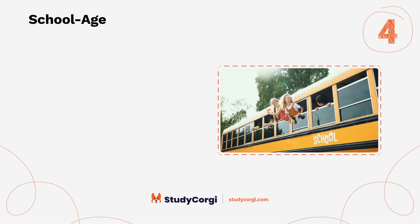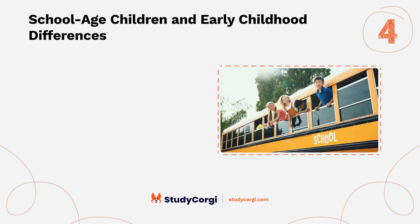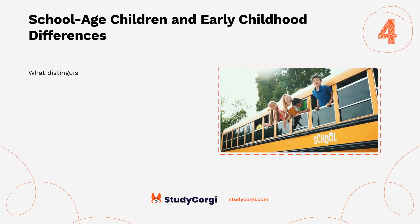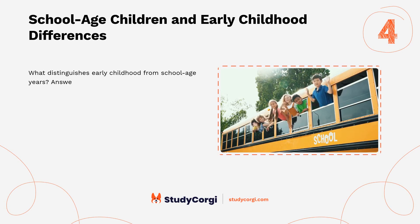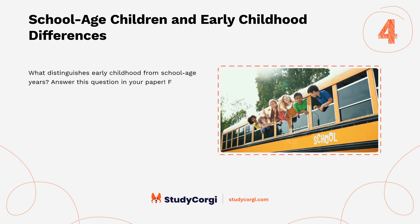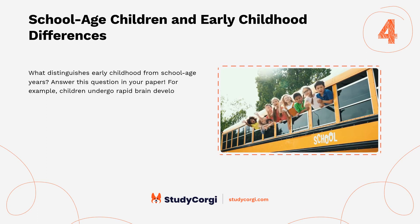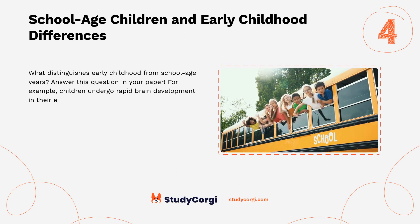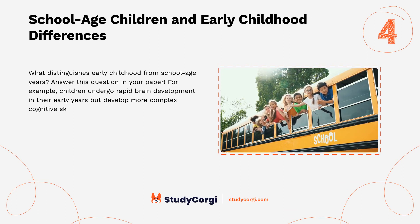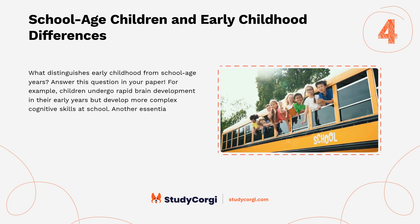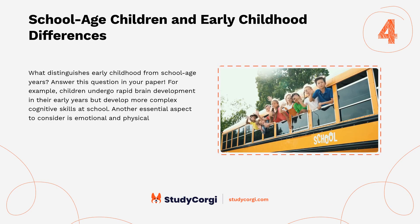School-age children and early childhood differences. What distinguishes early childhood from school-age years? Answer this question in your paper. For example, children undergo rapid brain development in their early years but develop more complex cognitive skills at school age. Another essential aspect to consider is emotional and physical development.